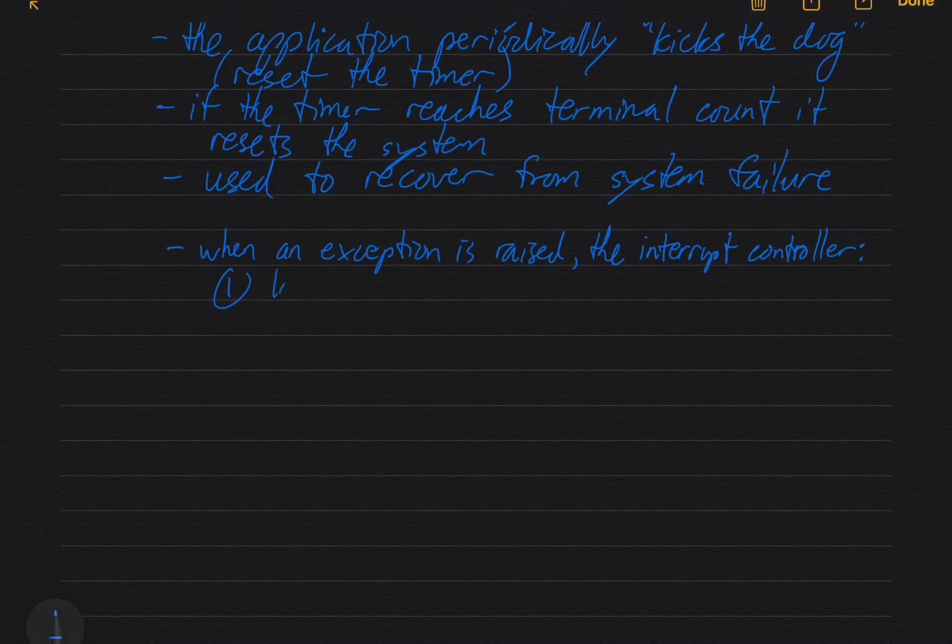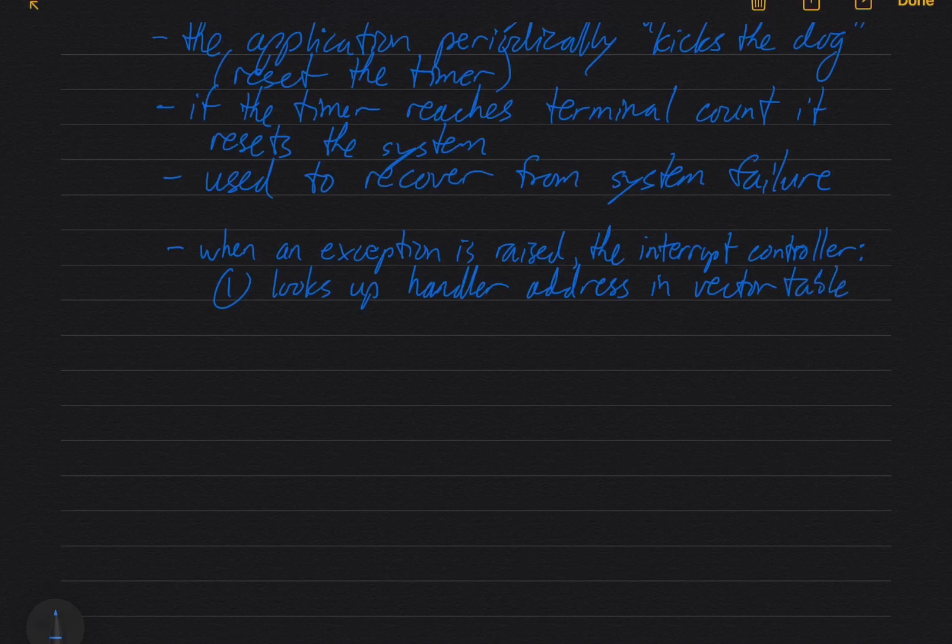So it looks up the handler address in the vector table and that's like a function pointer so it's going to put that address into the program counter and run the handler.